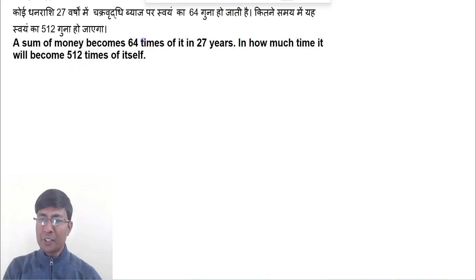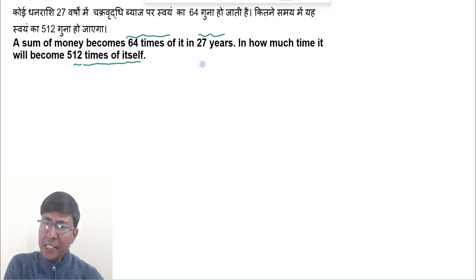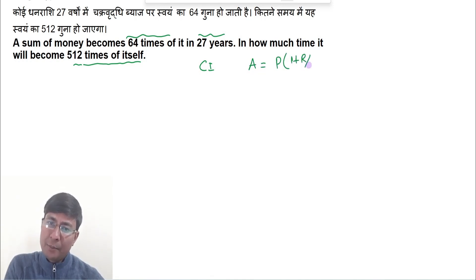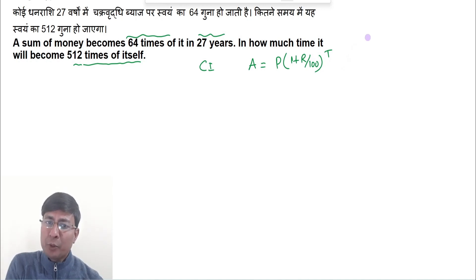A sum of money becomes 64 times in 27 years. In how many years will it become 512 times of itself? The compound interest formula is: Amount = Principal × (1 + r/100)^t. We will use this formula to solve the problem.